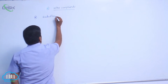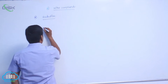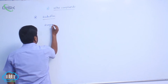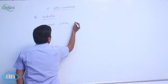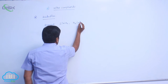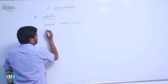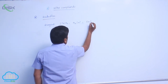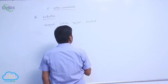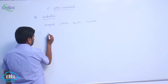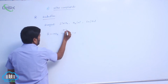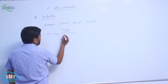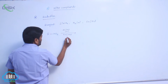Reduction of nitroalkanes. The reagents used are lithium aluminium hydride, hydrogen in the presence of a nickel catalyst, tin in the presence of hydrochloric acid, zinc in the presence of hydrochloric acid, or iron in the presence of hydrochloric acid.